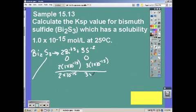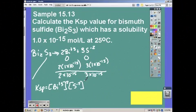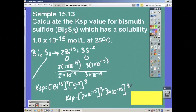We should have 2 bismuths and 3 times the concentration for sulfur. So we get 2 times 10 to the negative 15 and 3 times 10 to the negative 15. Write your Ksp expression out before plugging it in. Then plug in your values and Ksp is equal to 1.08 times 10 to the negative 73 or 1.1 times 10 to the negative 73.